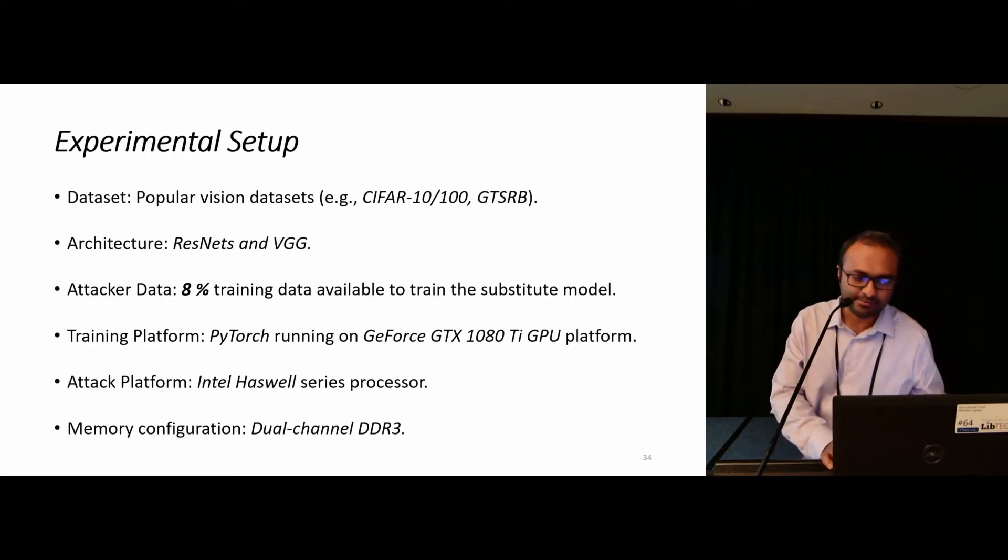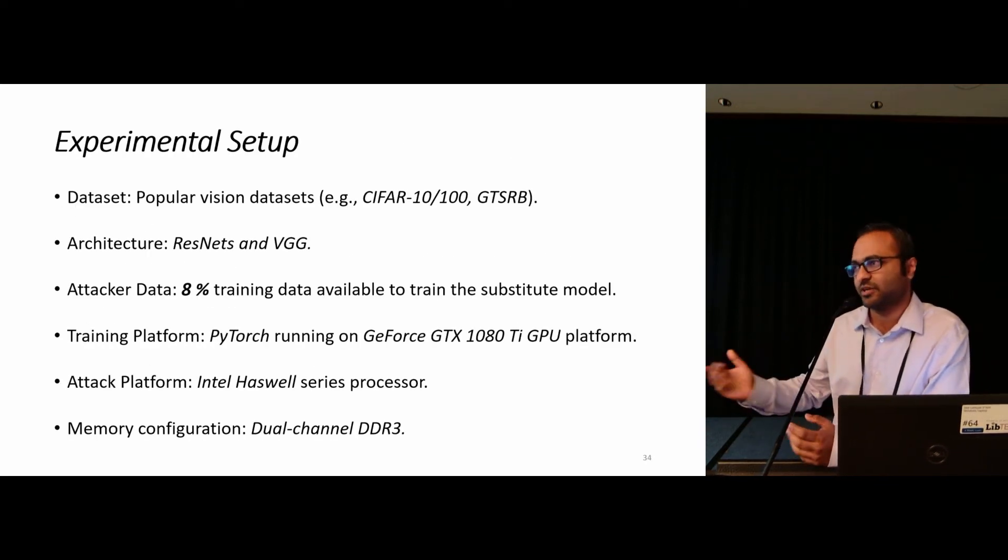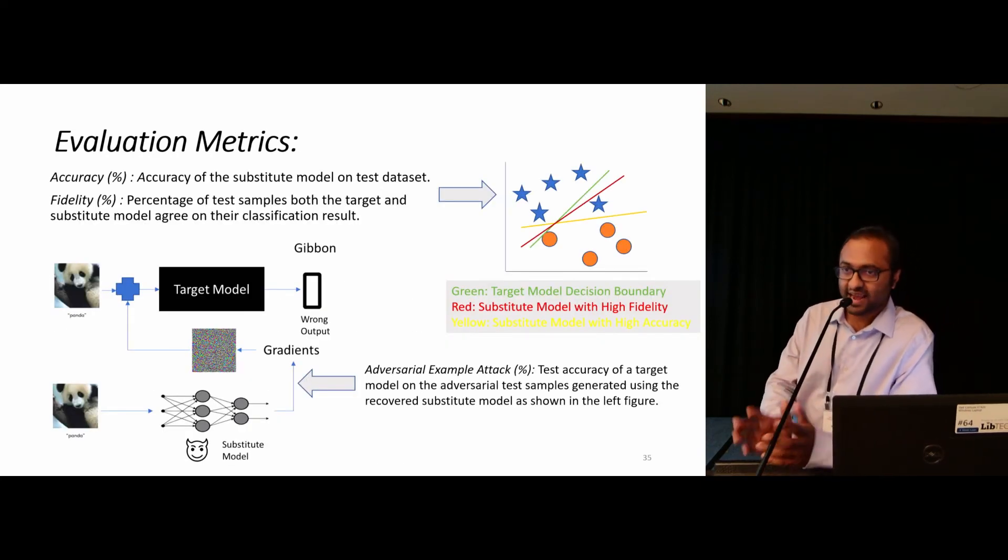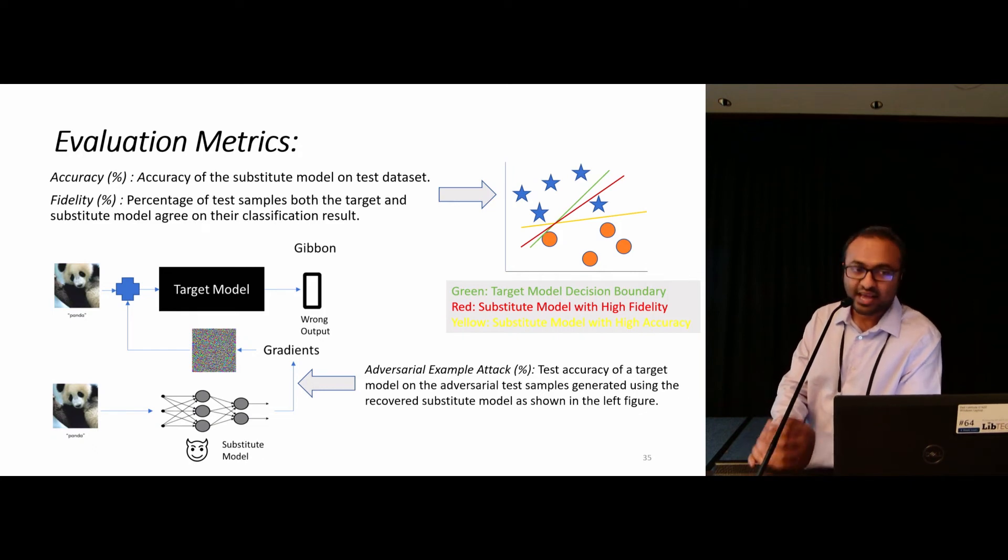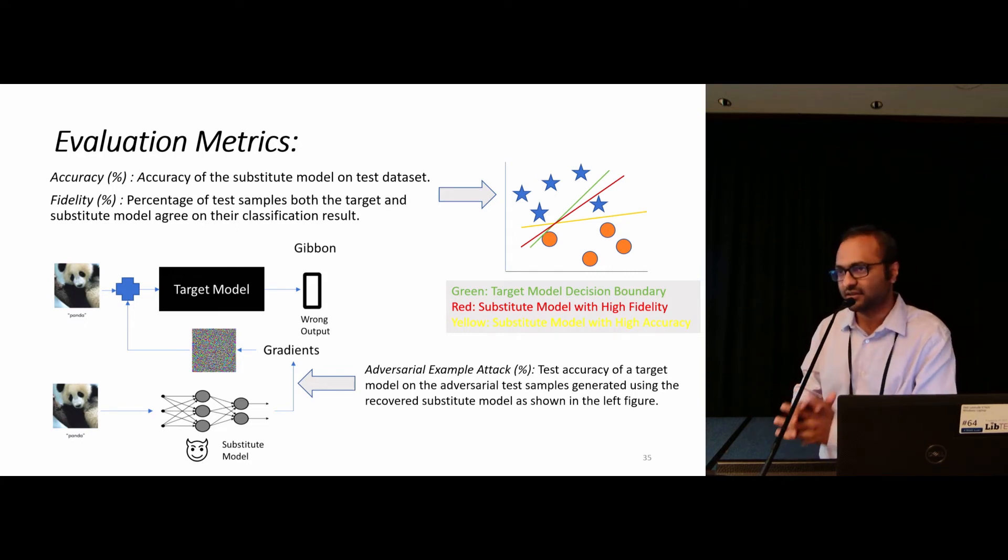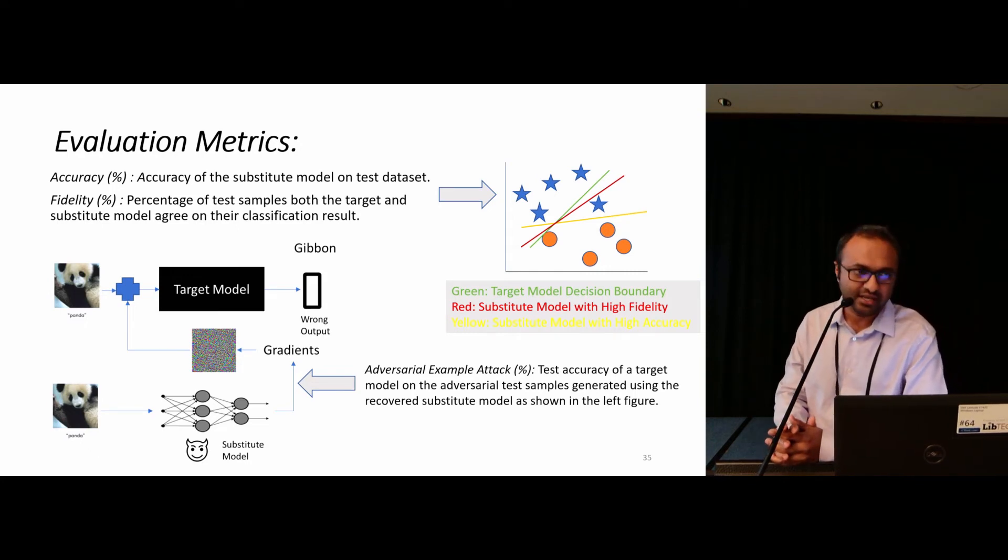For experimental setup, we basically perform the experiment on popular vision datasets. For evaluation metrics, we report the accuracy of the substitute model and also report the fidelity of the substitute model, which basically shows how close the decision boundaries are between the substitute and target model, and we also report the adversarial accuracy using the substitute model transferred to the target model.